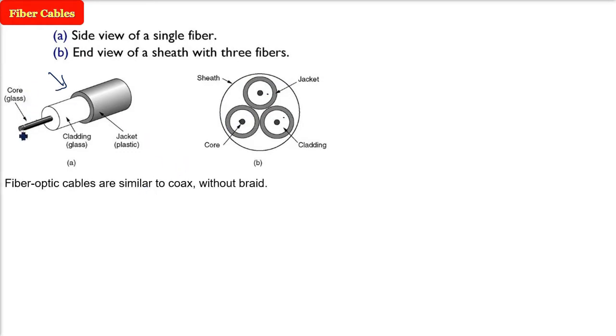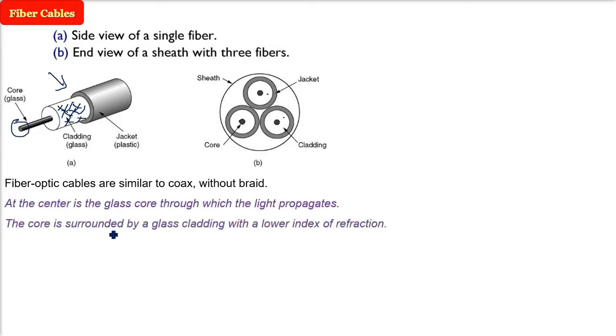Fiber optic cables are almost similar to coaxial cable, but they don't have the netted braid protective sheath of metal and cloth. The center is the core, made of glass, where the light propagates. Above this core it is surrounded by glass cladding, and the refractive index is lower than the glass core because we want total internal reflection.